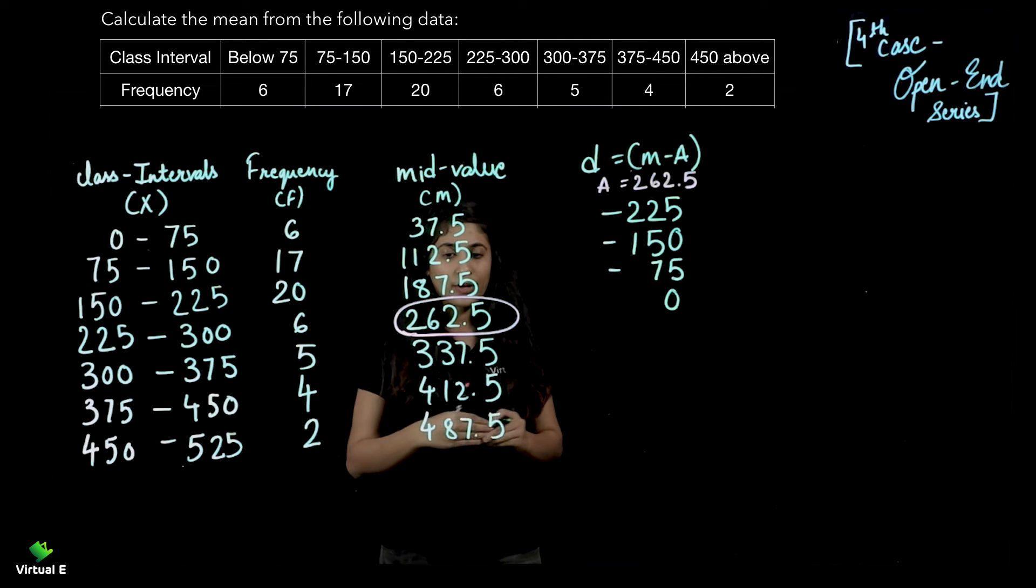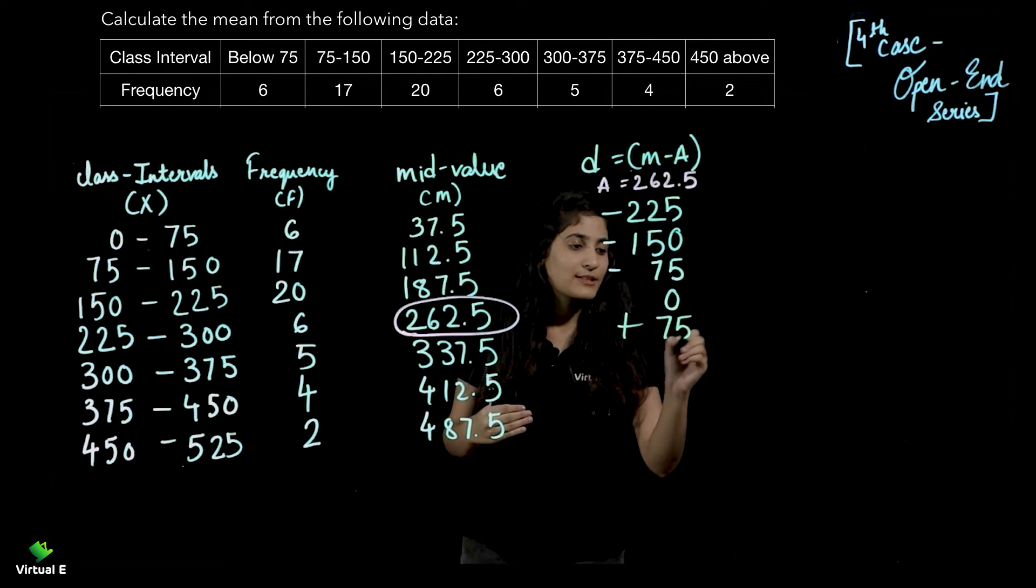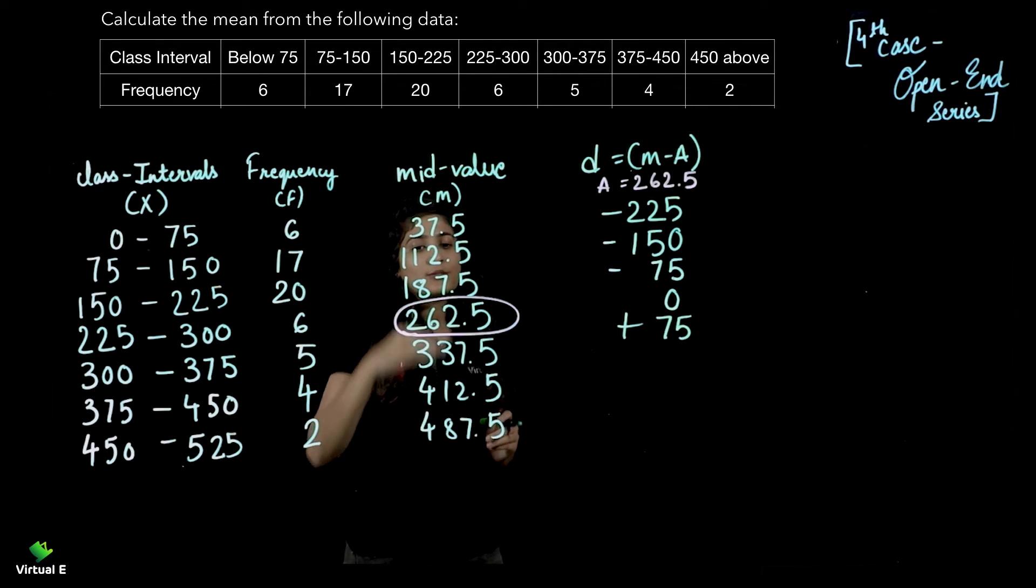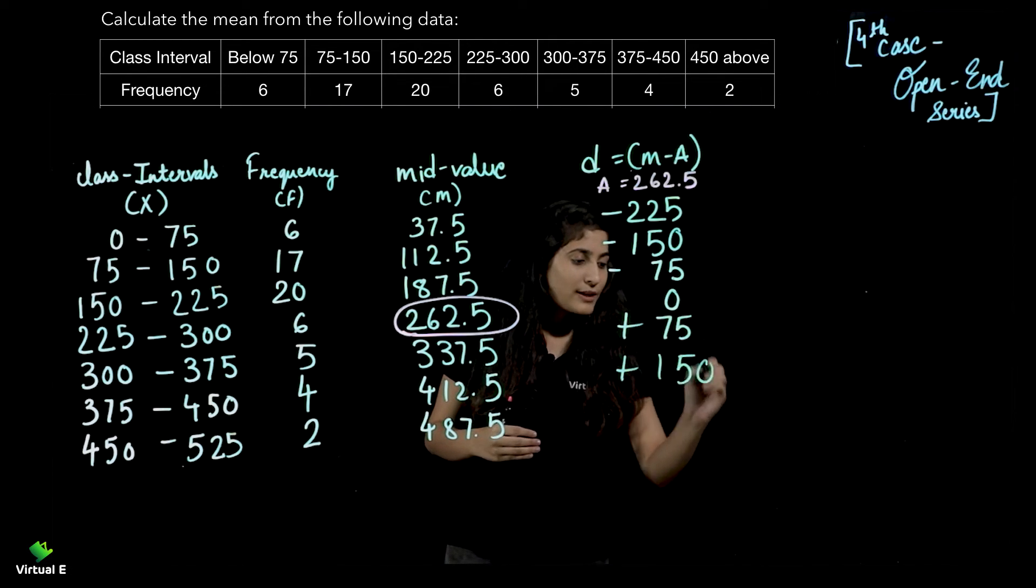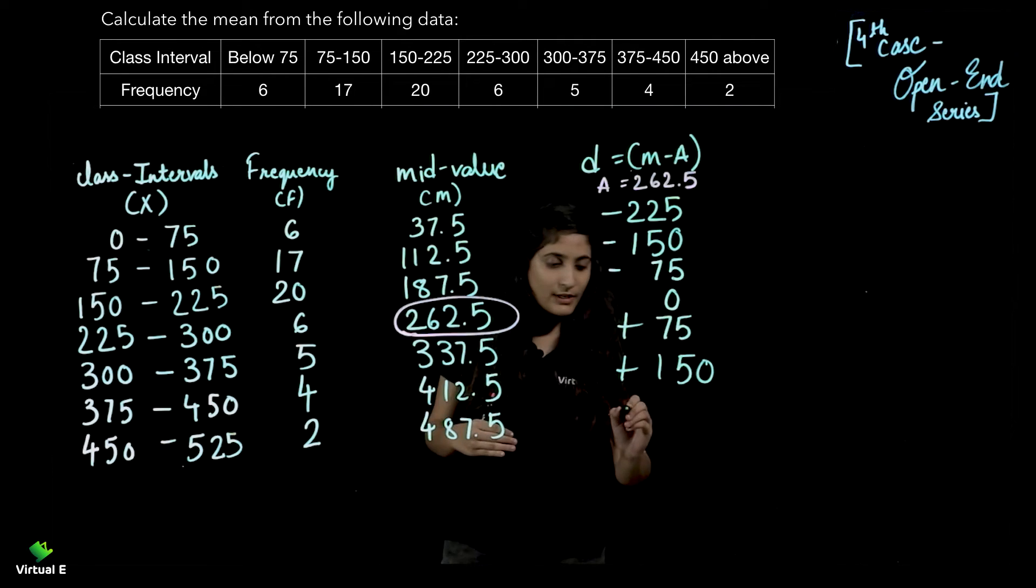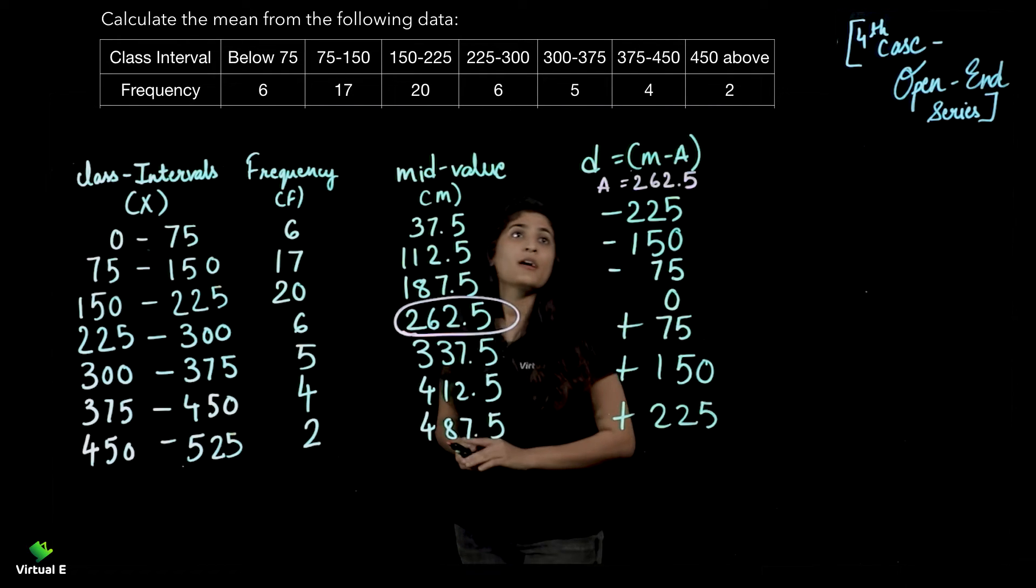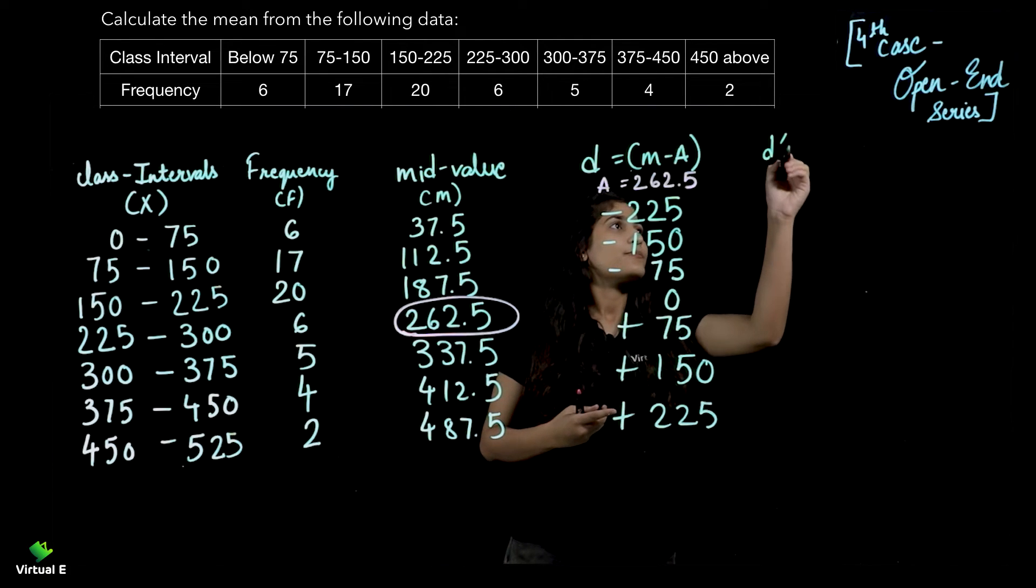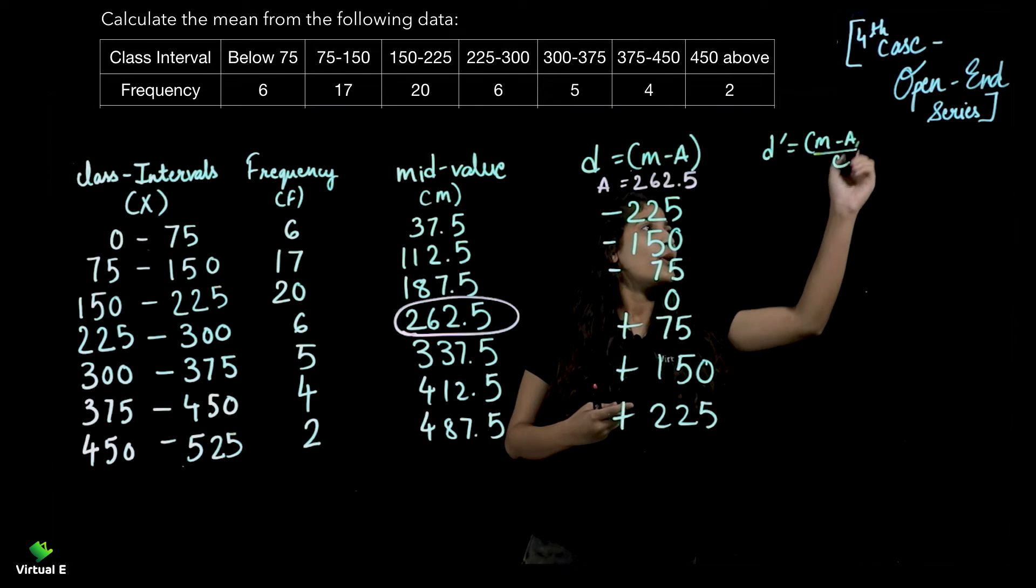337.5 minus 262.5 will give you plus 75. 412.5 minus 262.5 will give you plus 150. 487.5 minus 262.5 will give you plus 225. After you are done calculating D, let's calculate D dash. For this, M minus A upon C.